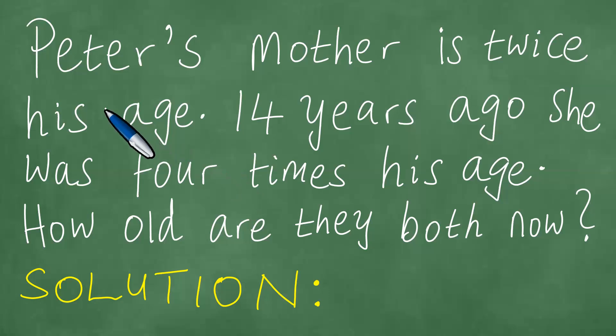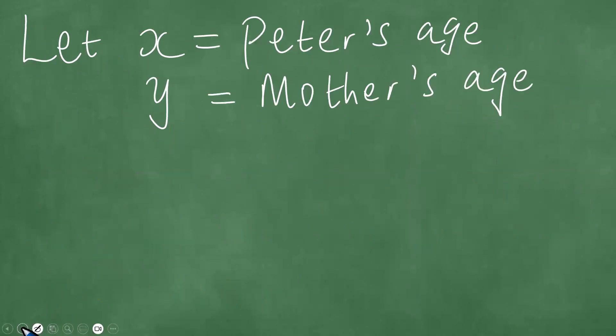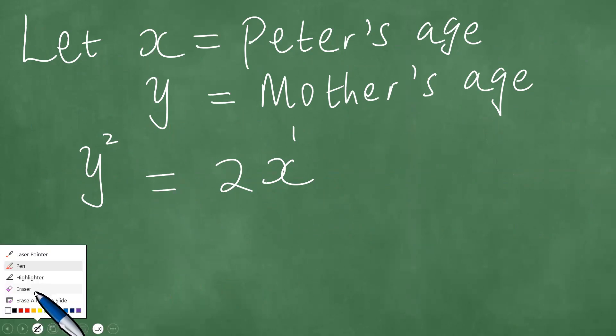The first part of the question says Peter's mother is twice his age. So in other words, if we look at the mother and Peter, we understand that the mother is twice his age. Therefore, to effect an equality here, we multiply these by two and equate the two parts: y = 2x.